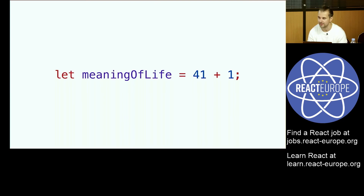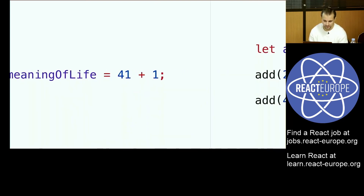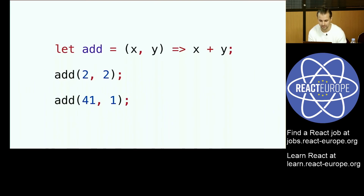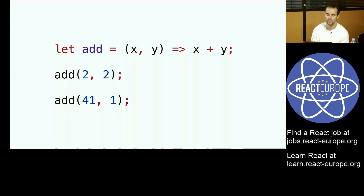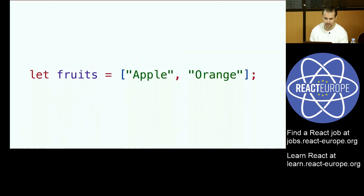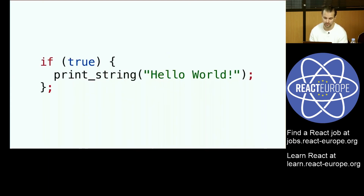How does this look? I can do: let meaning_of_life = 41 + 1. Straightforward. We can define functions — let's say we have an add function, so we can just pass in two numbers, in this case actually integers, and then create new values. We have lists — that said, we also have arrays. Lists are mutable, arrays are immutable, but we're going to talk about this a little bit later.